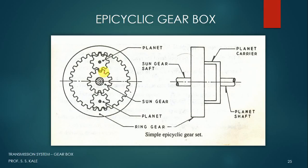Now let us see the construction of this epicyclic gearbox. As the name indicates, we are using an epicyclic gear arrangement. You will see the front view and the side view of the gearbox. Centrally we have a sun gear. Around the sun gear there are planet gears. In the side view you can observe that one shaft is connected to the sun gear.